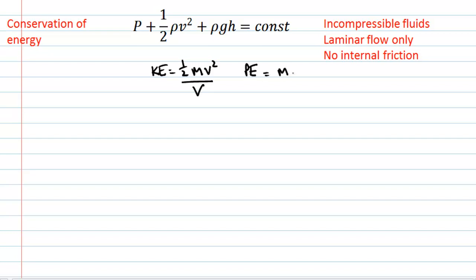The third term looks like potential energy — that's m times g times h. Once again, this isn't the mass, this is the density, and density is mass divided by volume, so this third term is actually the potential energy density. Kinetic energy and potential energy both have units of joules, and if I divide joules by a volume — joules per meter cubed — that's an energy density. Similarly, mgh divided by a volume is energy density.